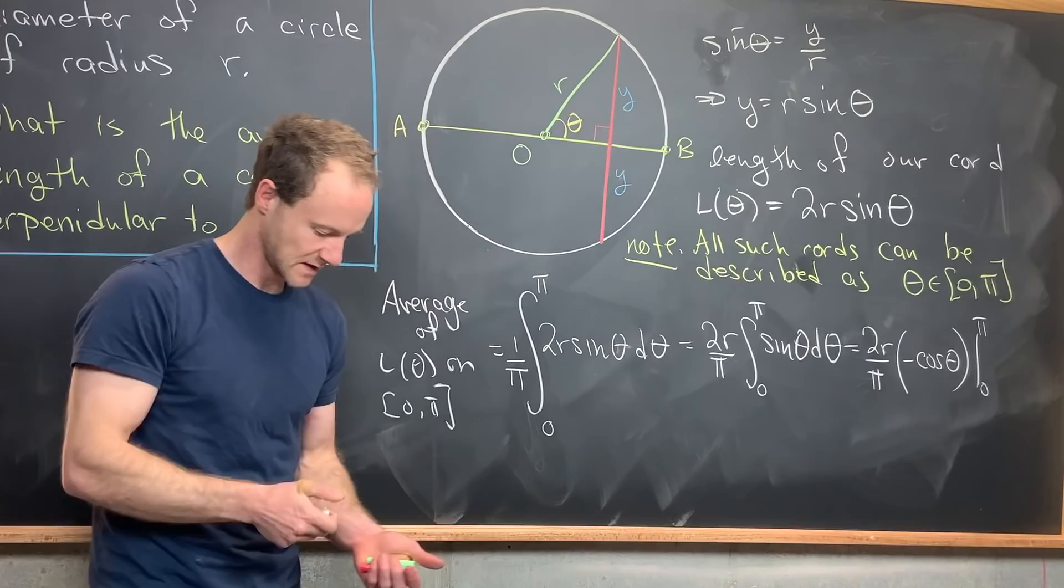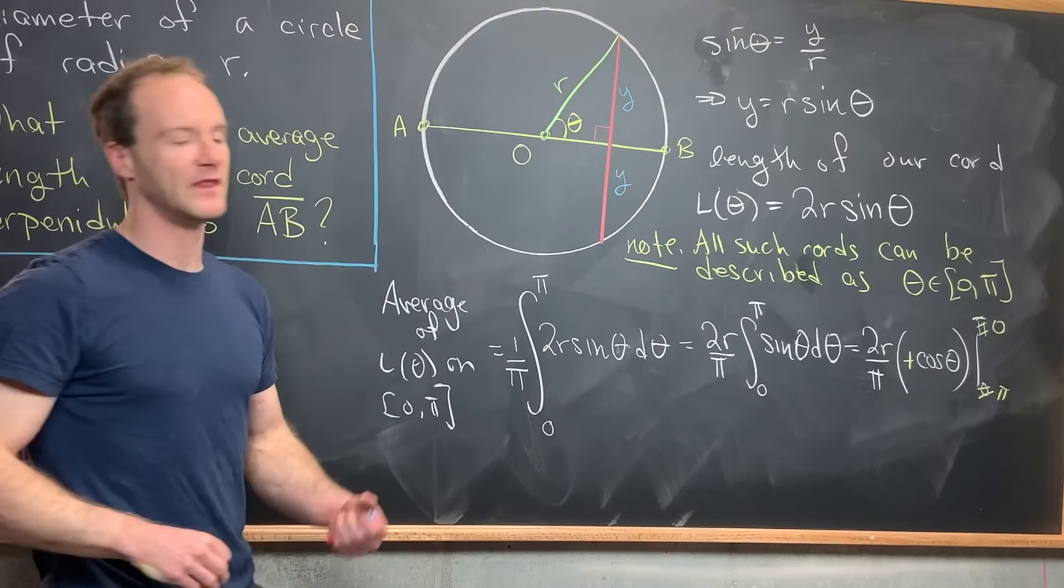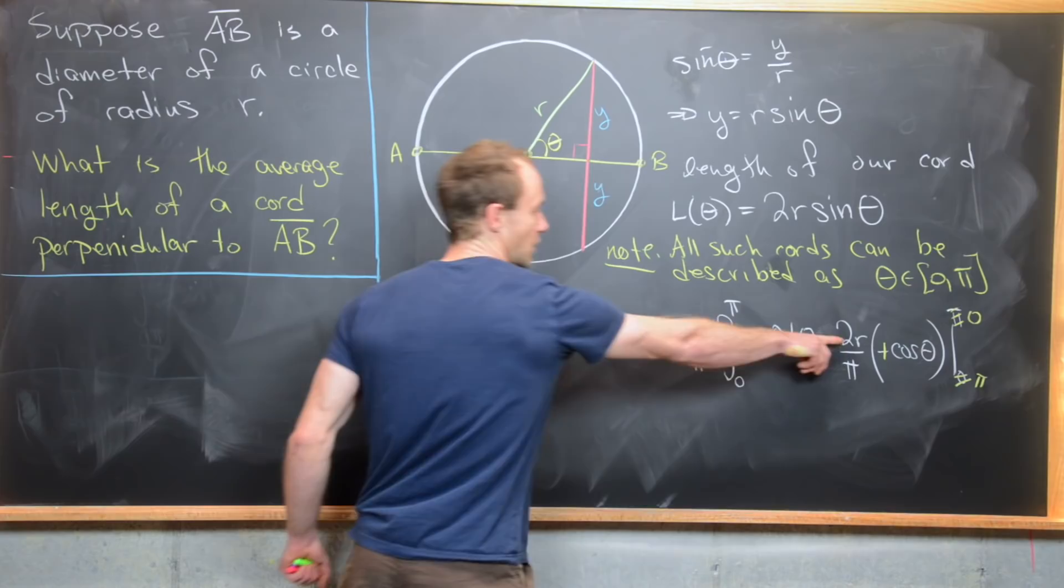Now what I would like to do is change the order of evaluation and change this from a minus to a plus. So I'll put a pi down here, and I'll put a 0 up here. And then we know that cosine of 0 is 1, and cosine of pi is negative 1. So we have 1 minus negative 1. In other words, we'll have 2, but that's multiplied by this. So in the end, we get 4 times R over pi.